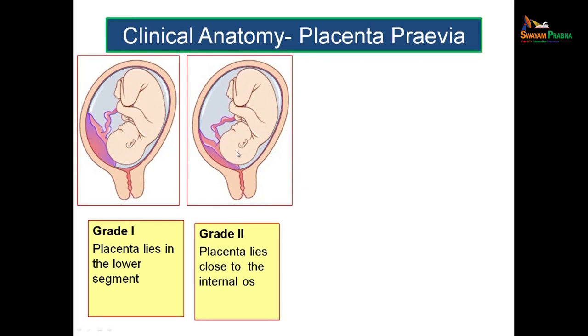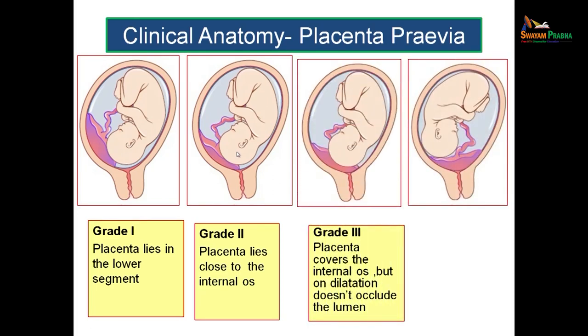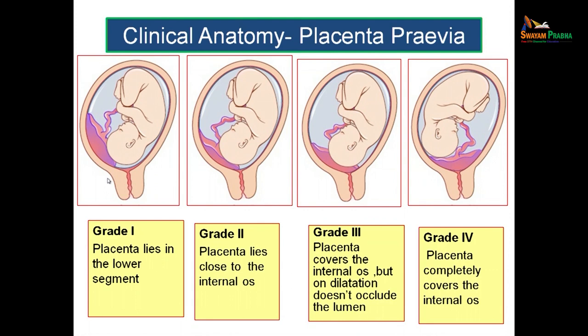Placenta previa has four grades: Grade 1 — placenta lies in the lower uterine segment but does not reach the internal os; Grade 2 — placenta lies as close as the internal os; Grade 3 — placenta covers the internal os but does not occlude it when the cervix is dilated; Grade 4 — placenta completely overlies the internal os and occludes it even when the cervix is dilated.